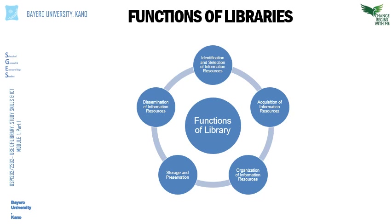Finally, among the processes for acquiring information resources is what is known as bequest. Bequest is a gift left to the library in an individual's will. When people write their will, they include the library as part of the beneficiaries. Over time, people leave part of their estate or collections to be donated to the library after they are gone. Naming the library in a will gives the opportunity to make a lasting contribution, be it small or intangible, and it goes a long way in developing the library.